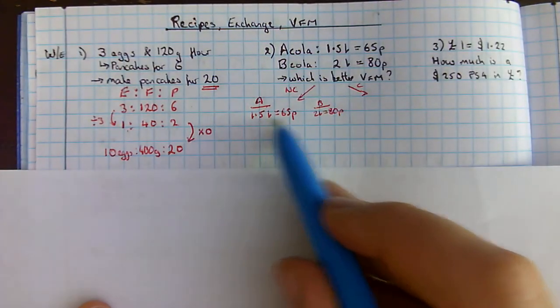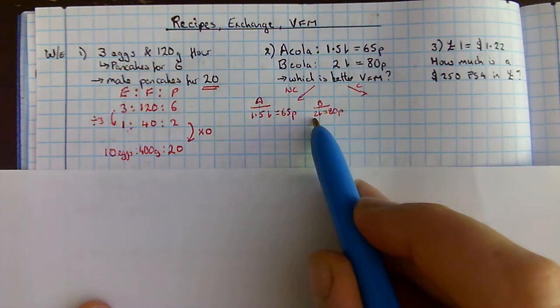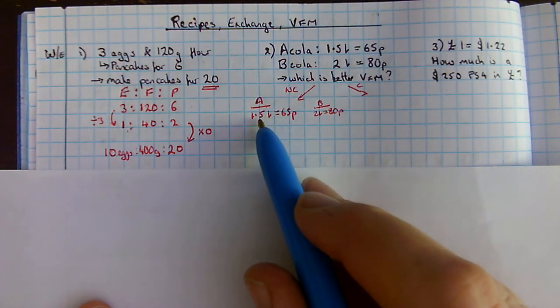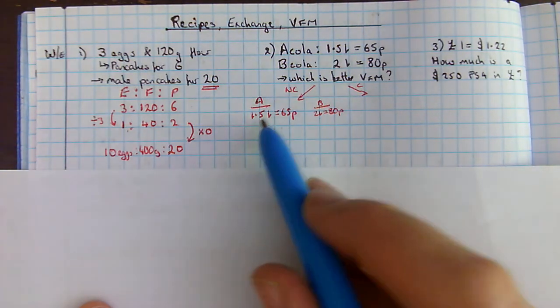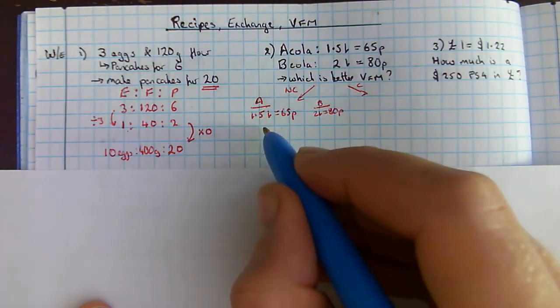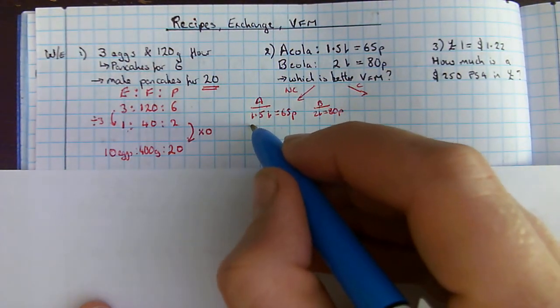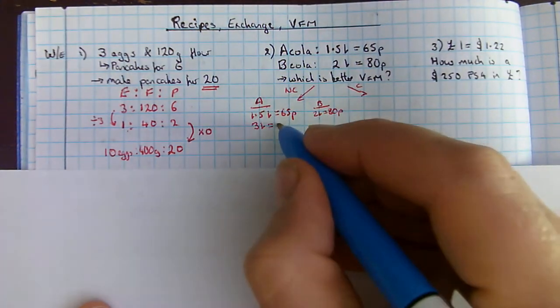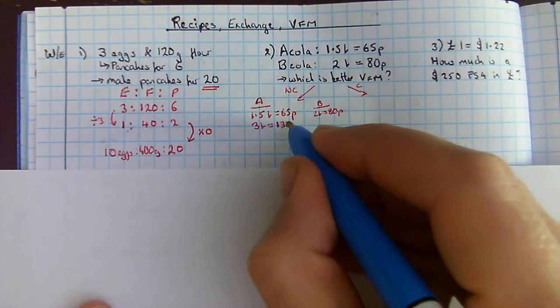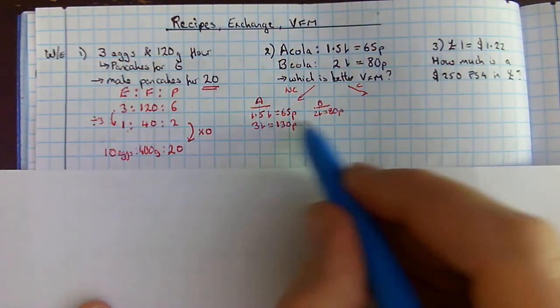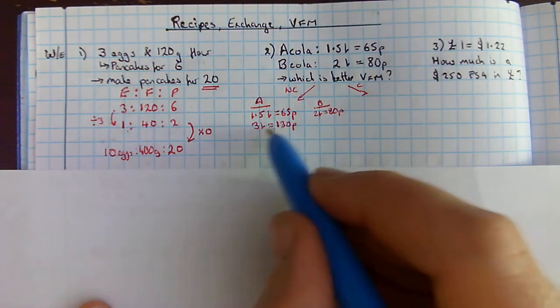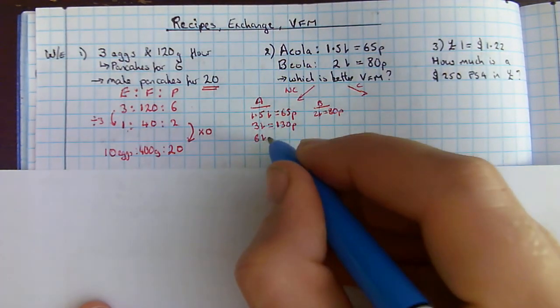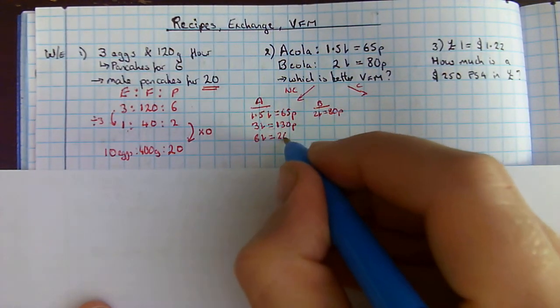Now, what I want to do is multiply both of these so I've got the same quantity. Well, if I go up in my 1.5 times table, let's double it to make this into a whole number. So I can say 3 litres is going to give me 130p. I still can't compare the two. So I'm going to double this again, and it's going to give me 6 litres would cost me 260p.